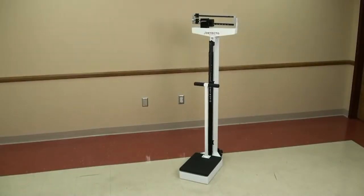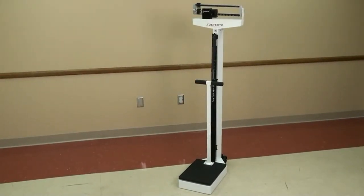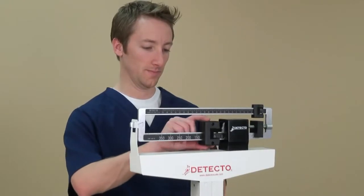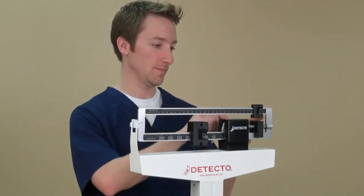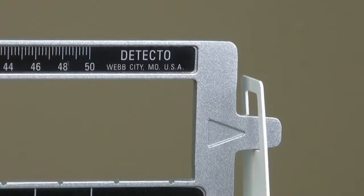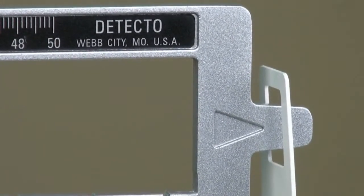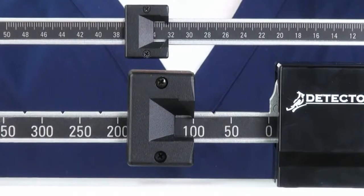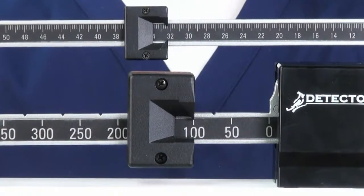The operation of Detecto's eye-level physician scale is incredibly easy. First, slide the larger poise on the bottom to the approximate target weight. Then, slide the smaller poise on the top until the waybeam balances. The combination of weight shown by each indicator is the total of the weight on the scale.